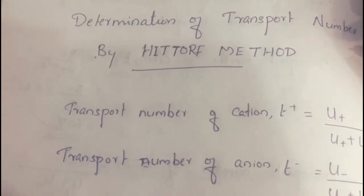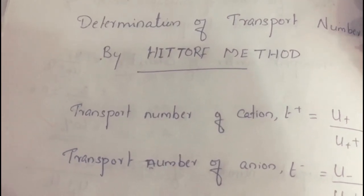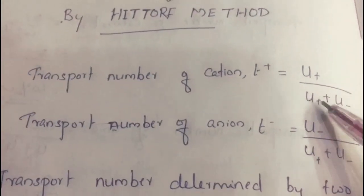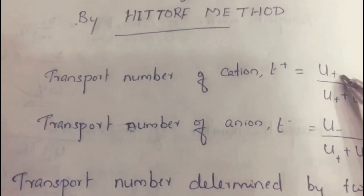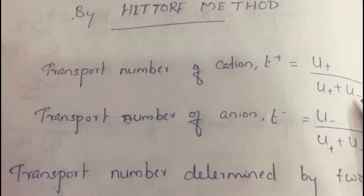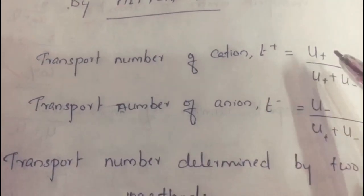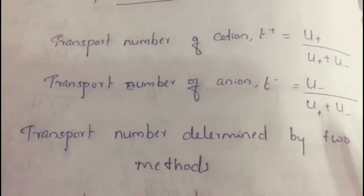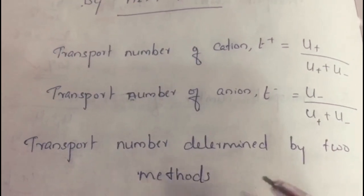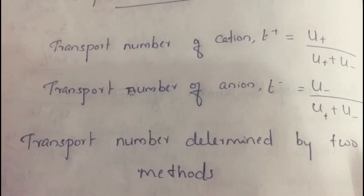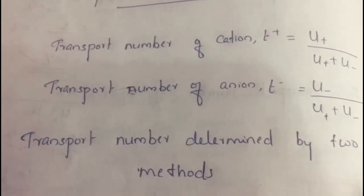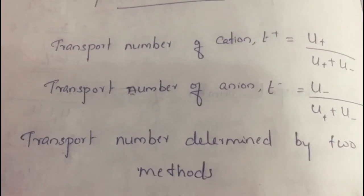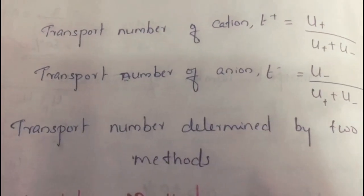Transport number is a fraction of total current carried by each ion. Transport number of cation equals U+ divided by (U+ plus U−), where U+ is the mobility of cation and U− is the mobility of anion. Transport number of anion equals U− divided by (U+ plus U−), and T+ plus T− equals 1. Transport number can be determined by two methods: Hittorf method and moving boundary method. In this session I am going to explain determination of transport number by Hittorf method.